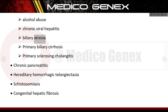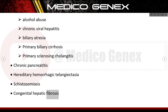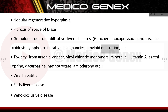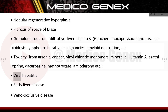Additional hepatic causes include biliary atresia, primary biliary cirrhosis, primary sclerosing cholangitis, chronic pancreatitis, hereditary hemorrhagic telangiectasia, schistosomiasis, congenital hepatic fibrosis, nodular regenerative hyperplasia, fibrosis of the space of Disse, granulomatous or infiltrative liver diseases (Gaucher, mucopolysaccharidosis, sarcoidosis, lymphoproliferative malignancies, amyloid deposition), toxicity from arsenic, copper, vinyl chloride, mineral oil, vitamin A, azathioprine, dacarbazine, methotrexate, amiodarone, viral hepatitis, fatty liver disease, and veno-occlusive disease.